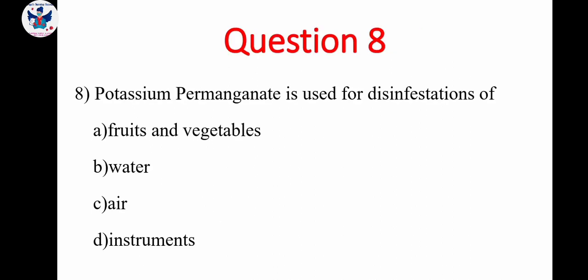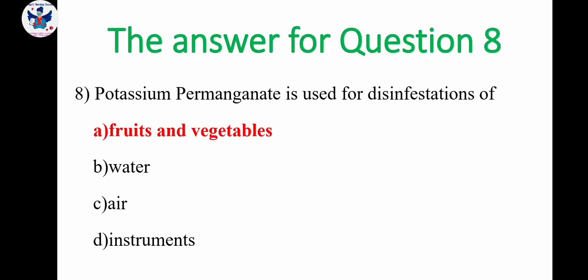Next, question 8. Potassium permanganate is used for disinfection of fruits and vegetables, water, air, instruments. So here it helps to disinfect fruits and vegetables only. Because water, we will be using chlorine, then air, we won't use potassium permanganate and instruments also, we won't use potassium permanganate. So the correct answer is option A, fruits and vegetables.